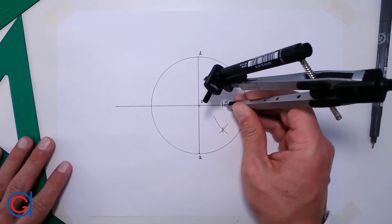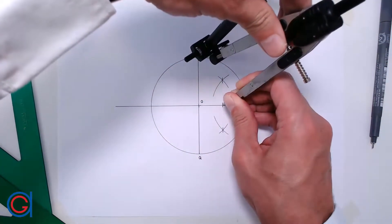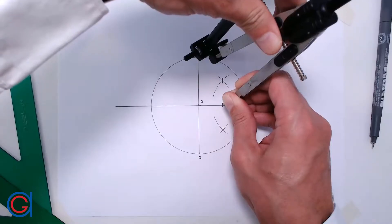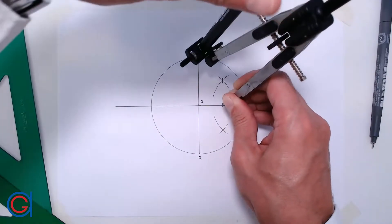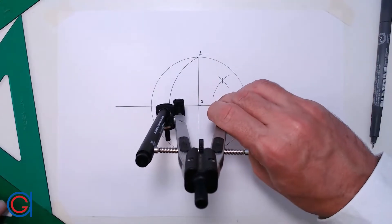So now, with our compass centered on point M, and with the radius MA, we scribe an arc to the left until it cuts our horizontal diameter at a new point, which we will call R.